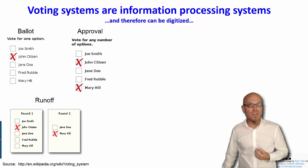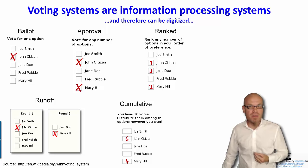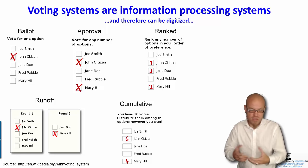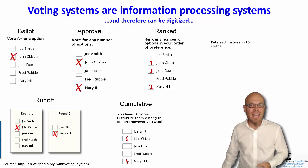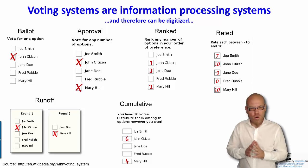For example, we can do approval votes. You can vote for any number of options. You can do ranked votes. Who is your first, second, third choice. You can do cumulative votes. You tell people you have 10 points. Distribute them among the candidates, among the issues. Or rated vote. We just say rate them from minus 10 to plus 10.